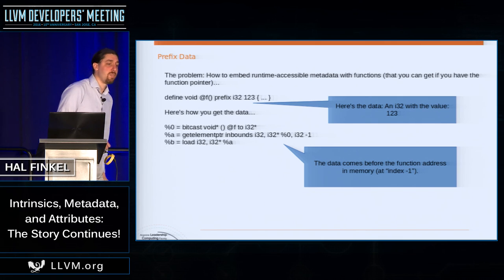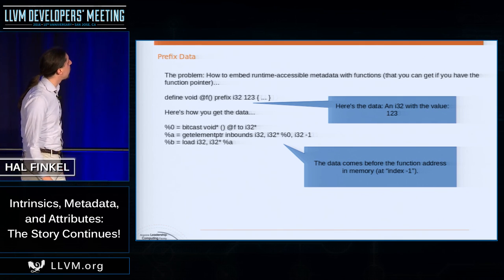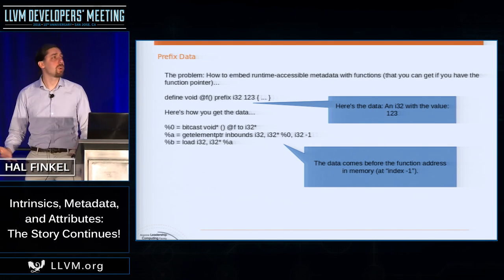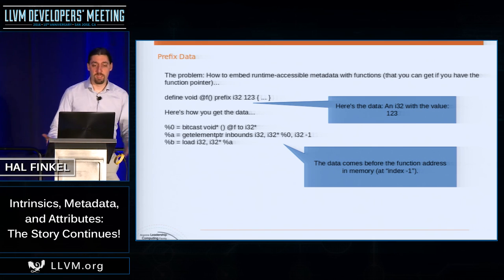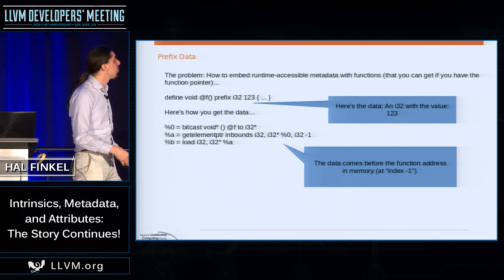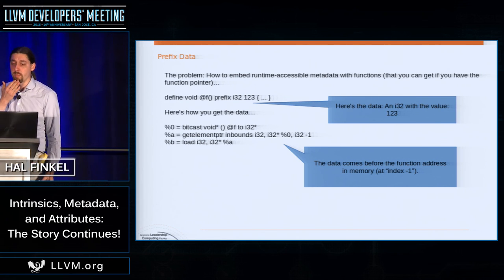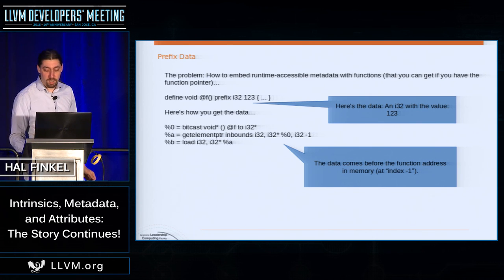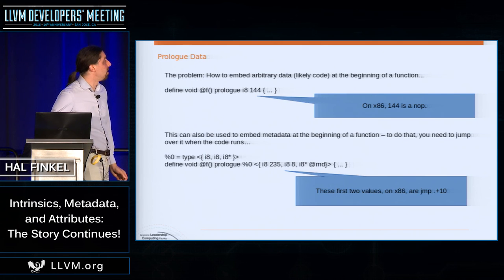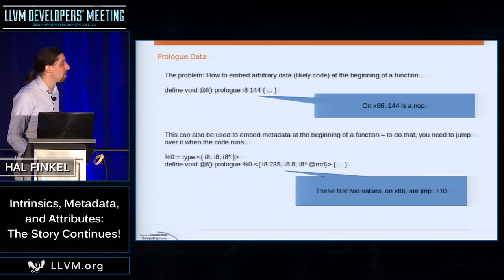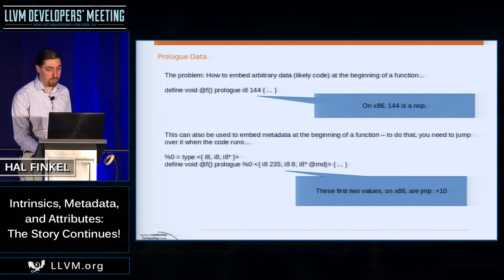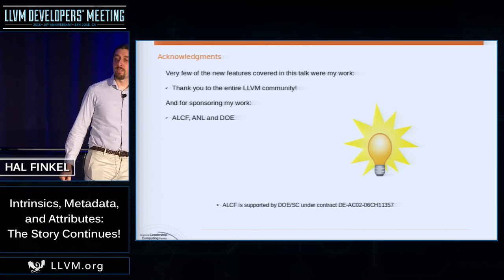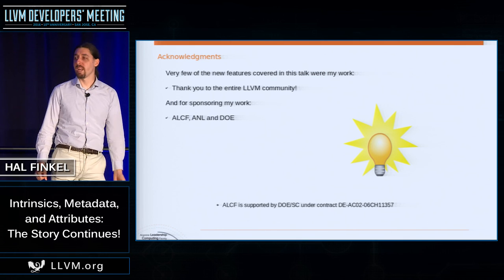If you have a JIT infrastructure or a non-C/C++ language where it's useful to associate metadata with particular functions, LLVM now has a couple of features supporting this. One is 'prefix data', which gives you a way of tagging functions with metadata. We also have 'prologue data', which allows you to insert code blobs at the beginning of functions in a fairly generic way. And that's where I'll end — thank you very much for your attention.